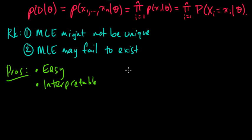Another pro is that it has some nice asymptotic properties. For example, it's consistent, and that basically means that as N goes to infinity, as the number of points you observe goes to infinity, it converges to the true value of theta with probability one.